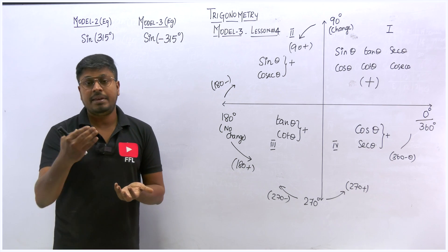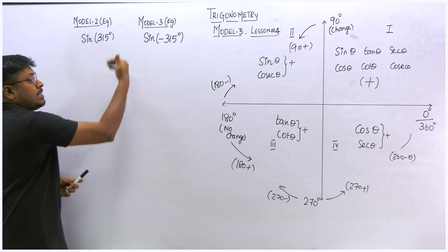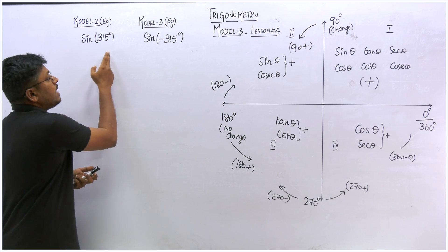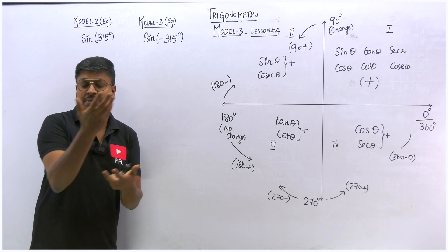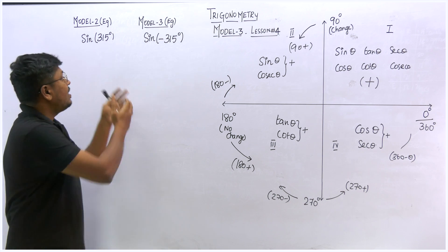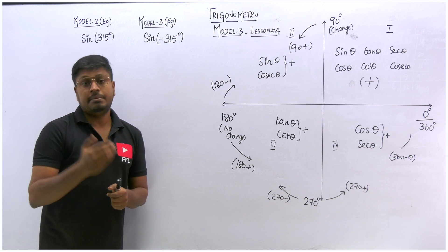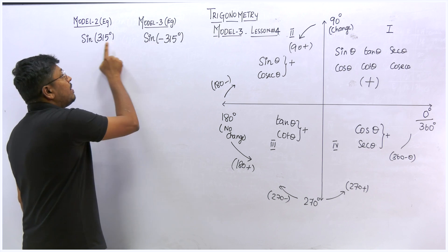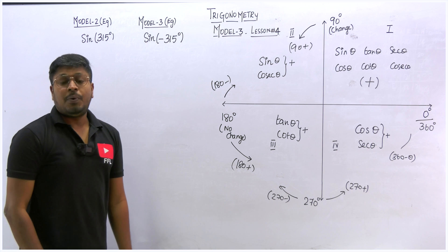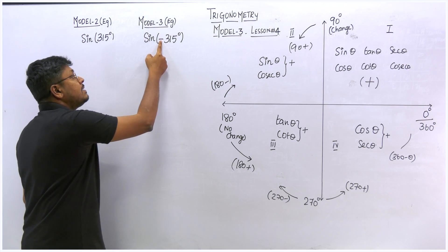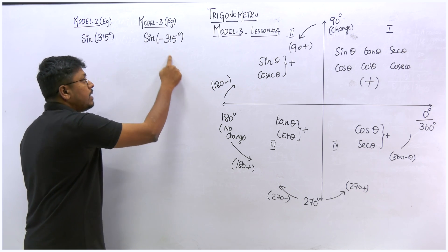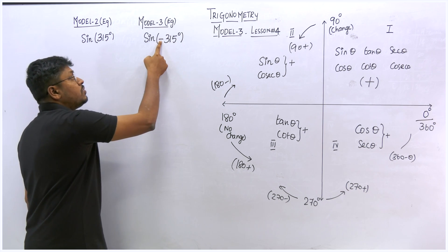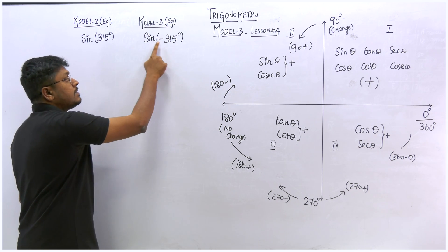After learning the chart in the previous video and solving example questions, I gave homework as well. In the previous lesson we solved a question like sine of 315°. Now in model 3, there is a small change — the question becomes sine of minus 315°. At this point students often make a mistake: they take the negative outside and write it as sine of 315°. That is wrong — you should not do that.